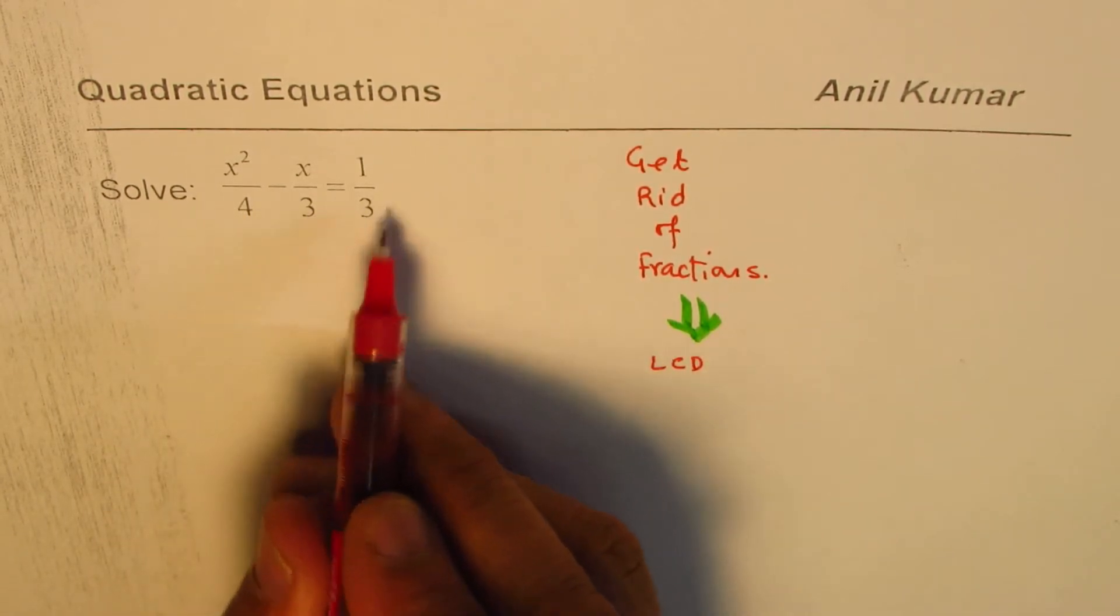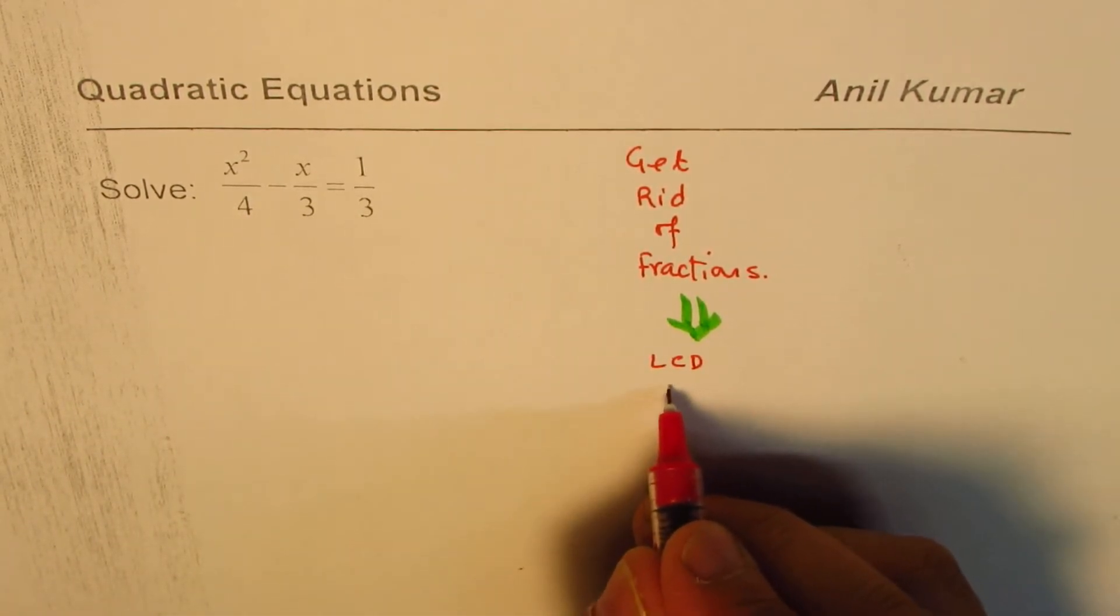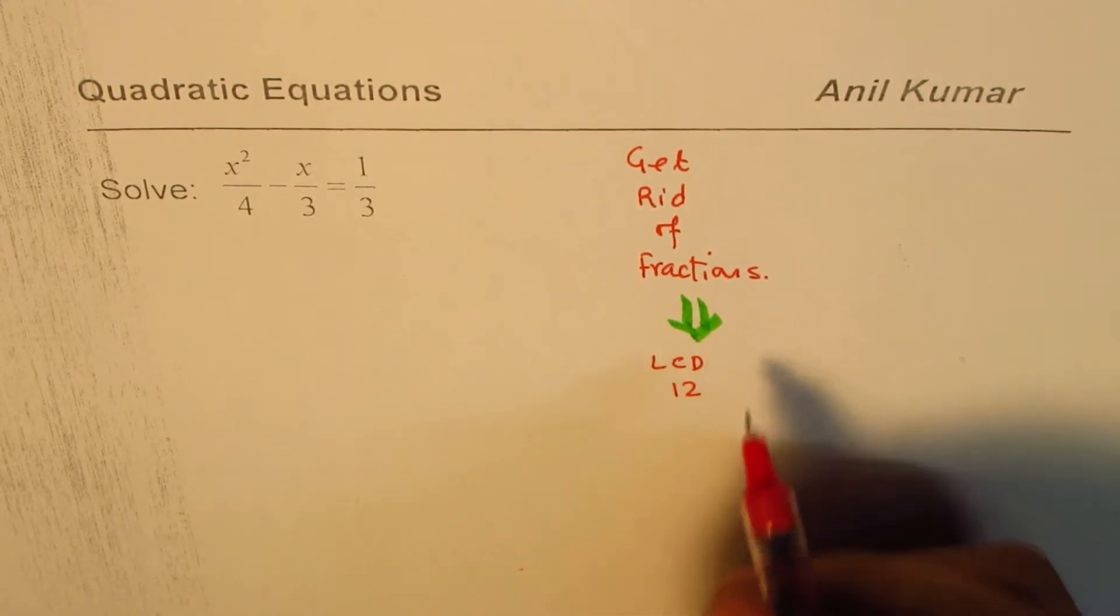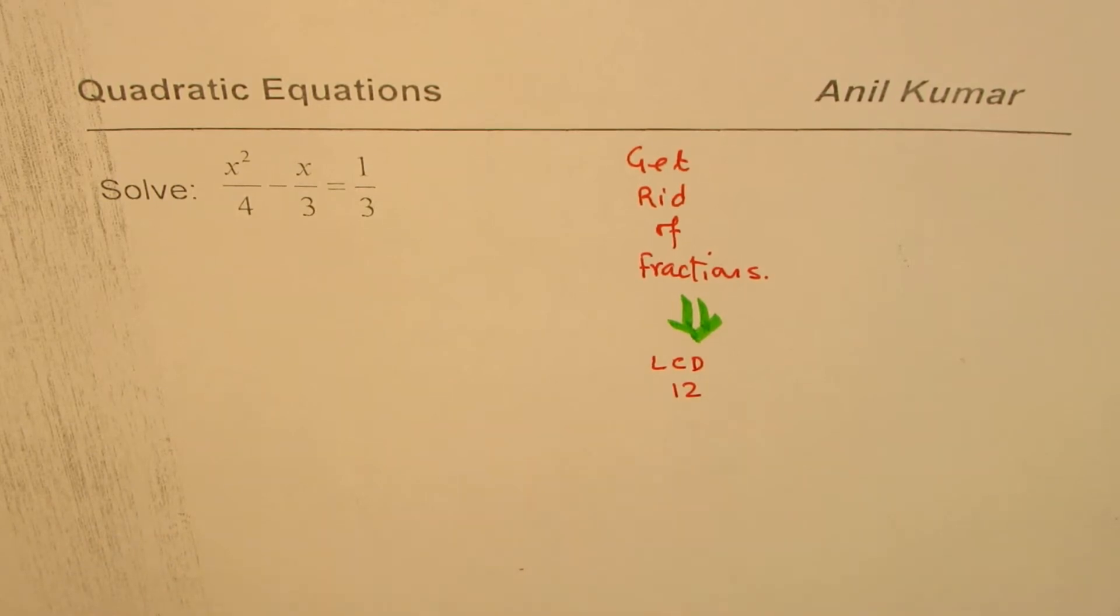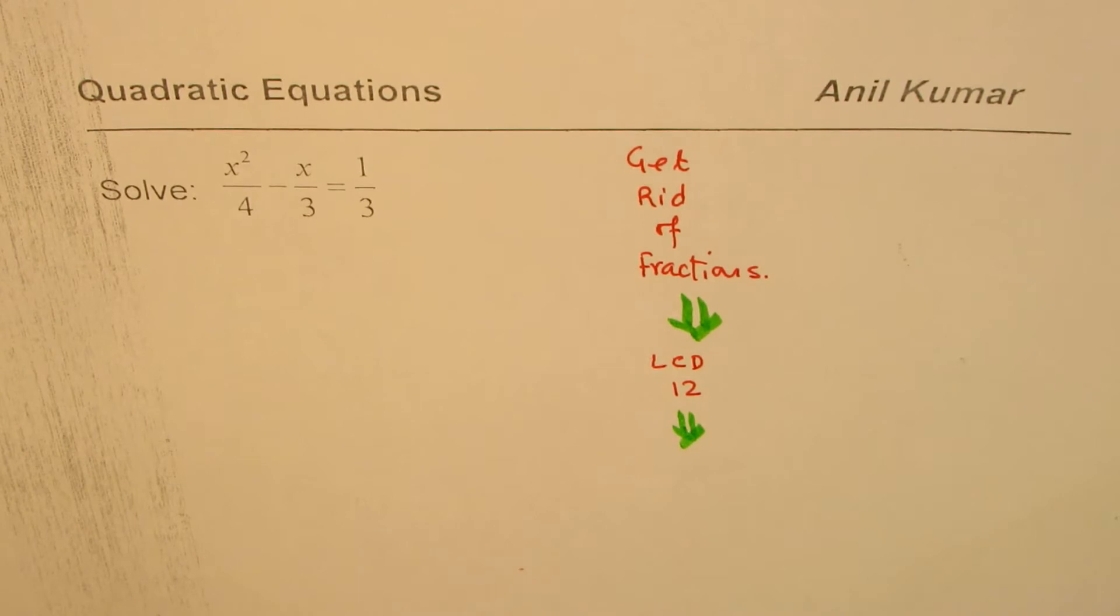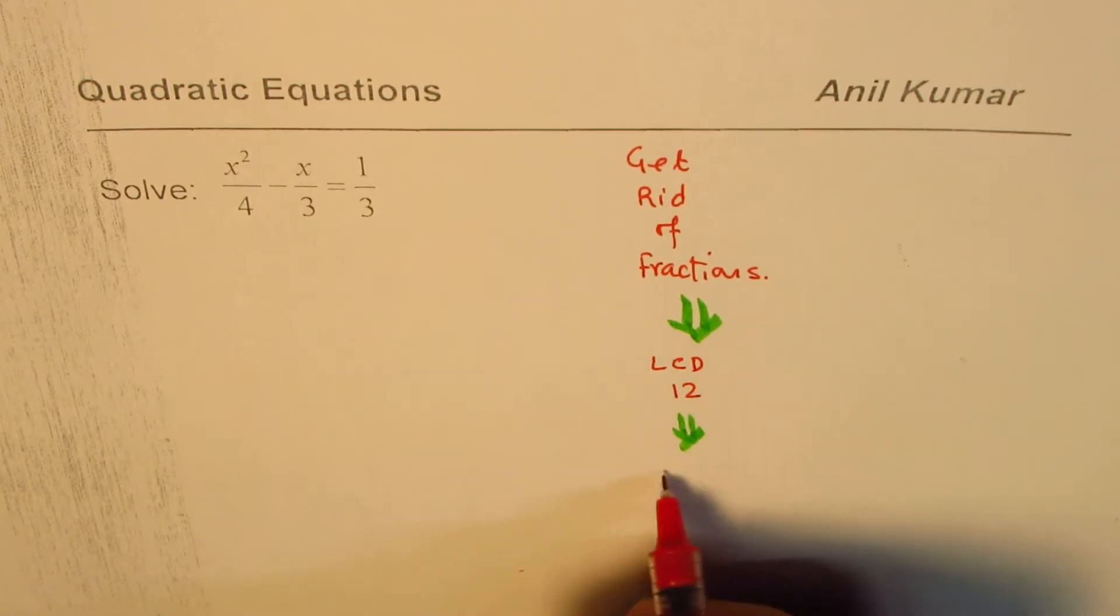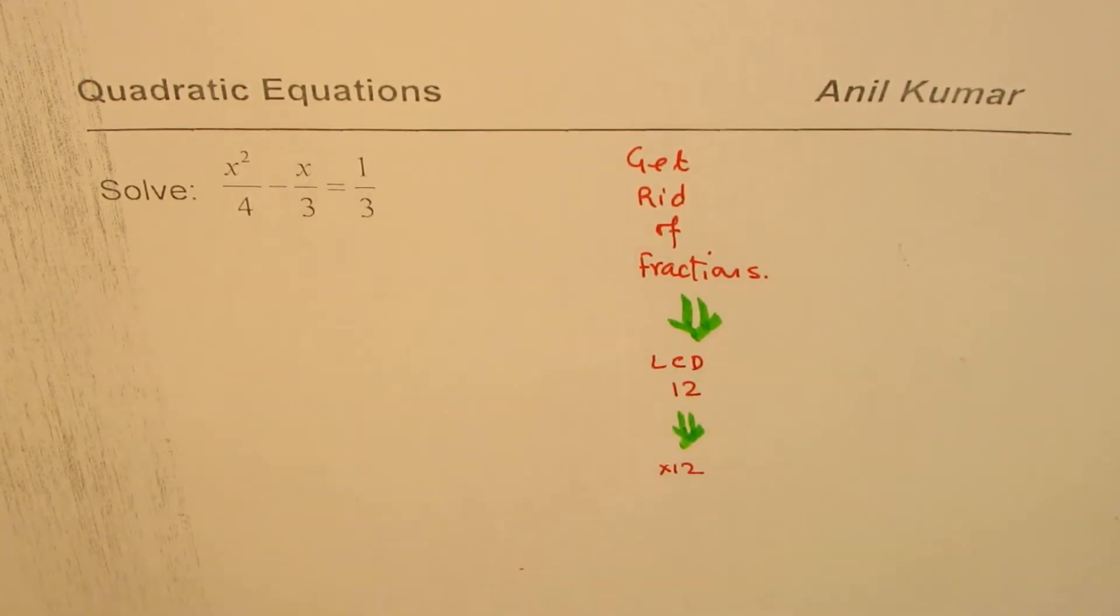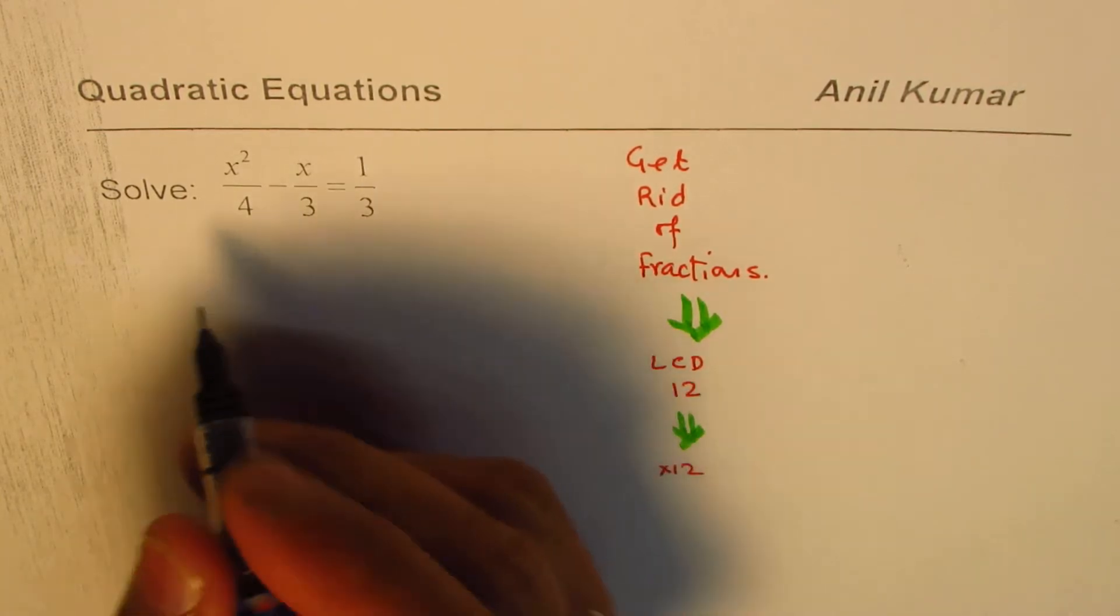The terms are 4, 3, 3. So that gives us 12 as the lowest common denominator. So what we do actually is we multiply each term by 12, times 12, to get rid of fractions. Let me show you this technique.